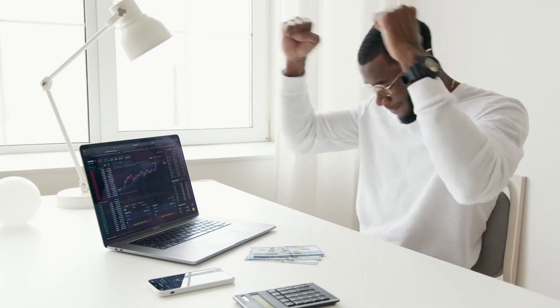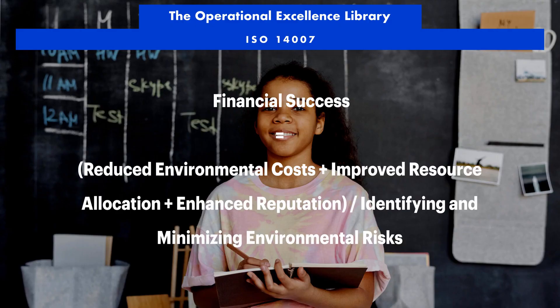1. Identify and Quantify Environmental Costs: ISO 14007 enables organizations to identify and quantify the environmental costs associated with their operations, including material and energy consumption, waste generation, and pollutant emissions. This information can then be used to prioritize areas for improvement and optimize resource allocation.